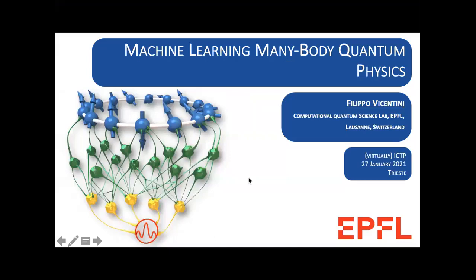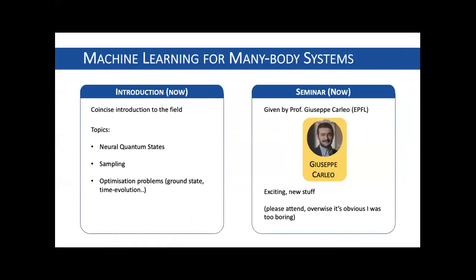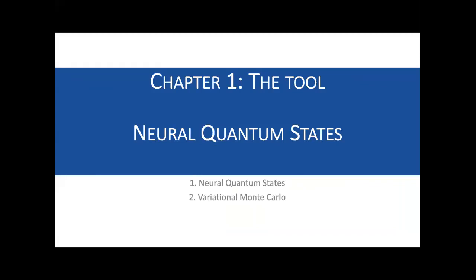Thanks everyone for the opportunity of being here, giving this introductory lecture to machine learning for many-body quantum physics. I will cover two topics: what are neural quantum states and how we can use neural networks to encode and represent quantum states, and then how we can use this tool to solve interesting problems such as finding the ground state or performing time evolution. The talk is divided into two parts — the first on neural quantum states, the latter on the problems we are trying to solve.